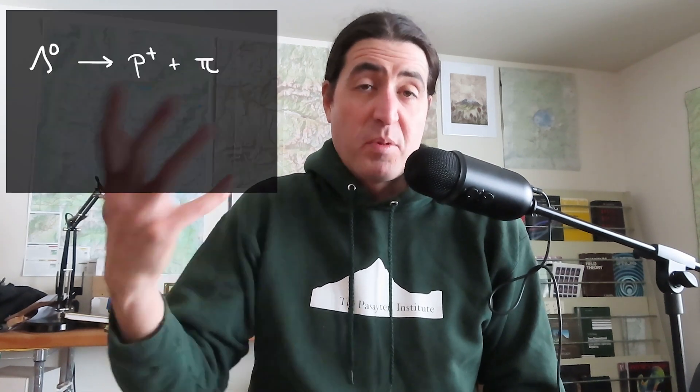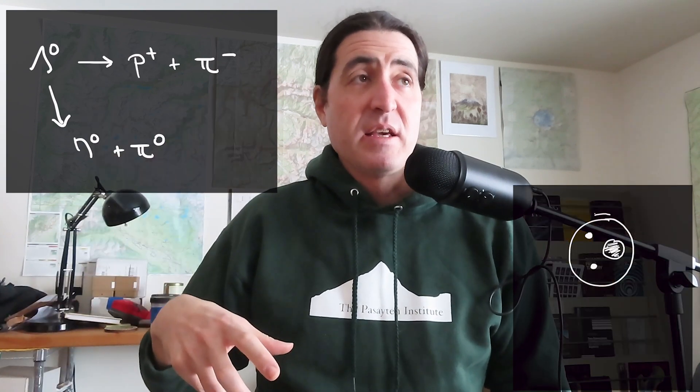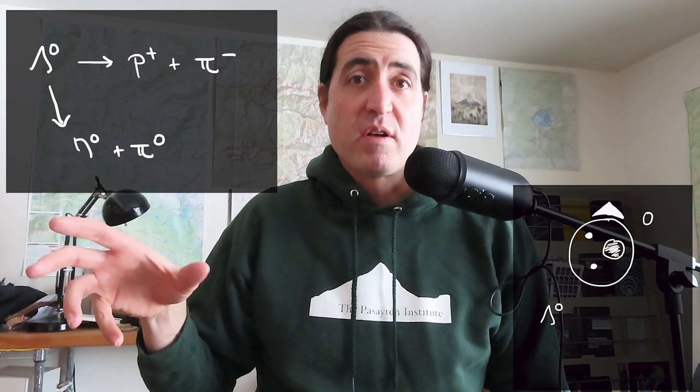I was working on my latest version of a field guide to particle physics, describing a specific strange particle: the lambda zero baryon. I was particularly interested in its decays, because one decay path is to a proton and a negative pion, and another decay path is to a neutron and a neutral pion. So I started sketching the whole thing out.